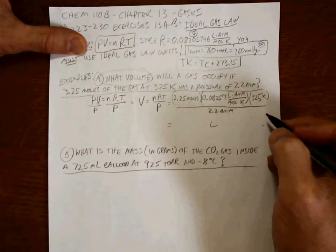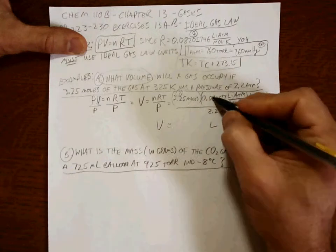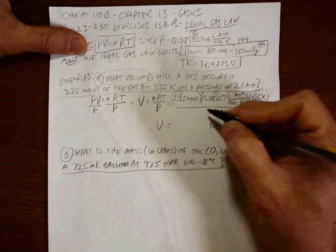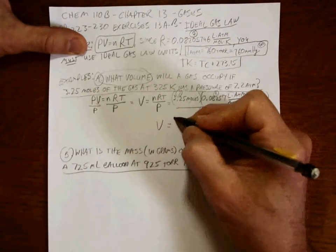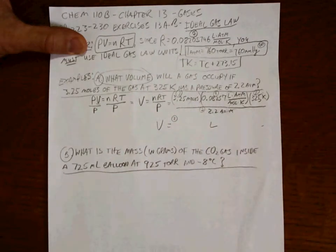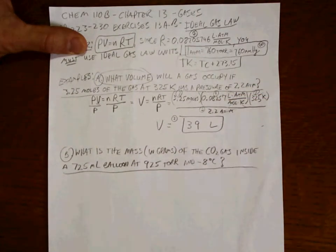How many sig figs will be in my answer? Well, there's 3 here. I used 4 there. There's 3 here. And there's 2 here. So the answer will have 2, the least number. It's just a multiplication. And when you punch all that into your calculator, you get 39 liters. Done.